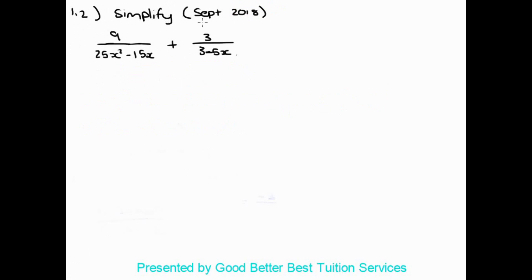Next, question 1.2 from the September 2018 paper says simplify. We have 9 over 25x squared minus 15x, plus 3 over 3 minus 5x. The numerators are already simplified; we need to focus on the denominators. On the left-hand side we can factorize by taking out a common factor — 5 goes into both terms and x goes into both, so we take out 5x, which leaves us with 5x minus 3.